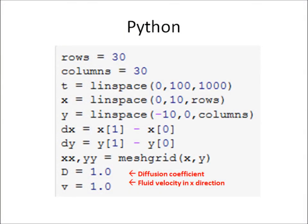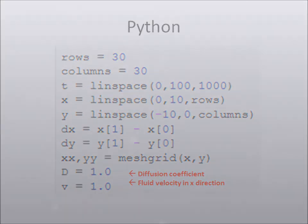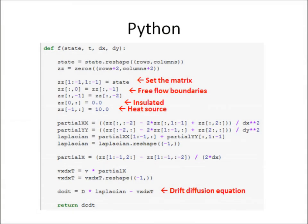The following few slides show how we use Python to solve this heat transfer problem. Our system is a square two-dimensional box. We have set our diffusion coefficient constant and the fluid velocity in the x-direction with a time step of 100 seconds. The function shown uses the drift diffusion equation. It takes an initial state and forms a square matrix with two extra rows and columns, then sets the initial condition to the inside matrix. The extra two rows and columns are for boundary conditions, which can be set to however you want your system to behave.